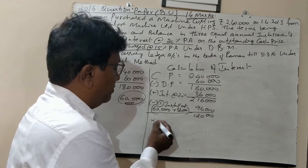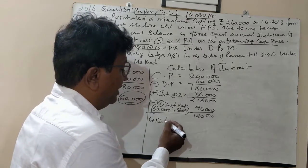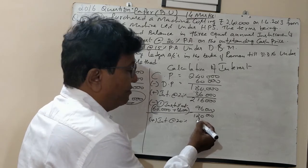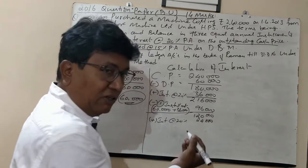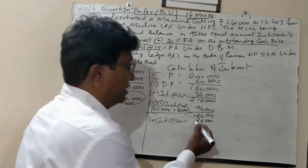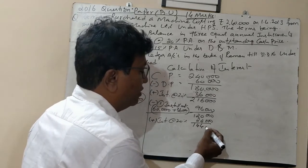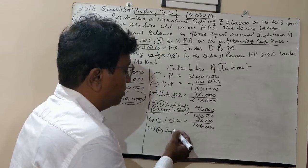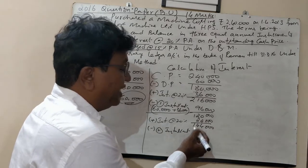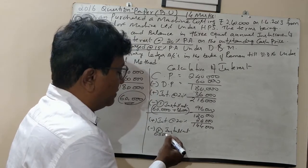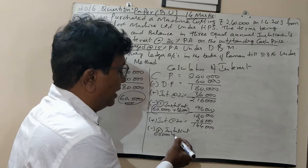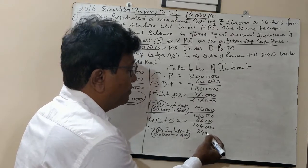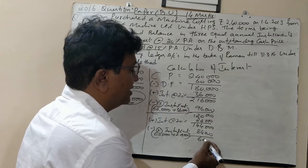In the second year, you have to pay on ₹1,20,000. Calculate interest at 20%: 10% is ₹12,000, so 20% is ₹24,000, giving ₹1,44,000. Deduct the second installment: ₹60,000 cash price plus ₹24,000 interest equals ₹84,000. The balance left is ₹60,000.